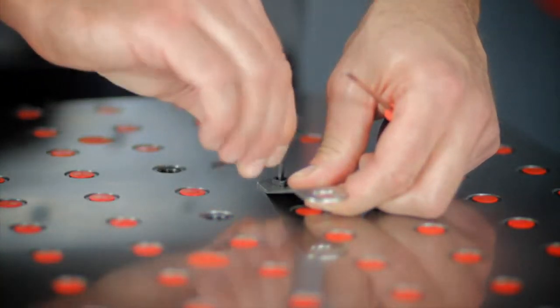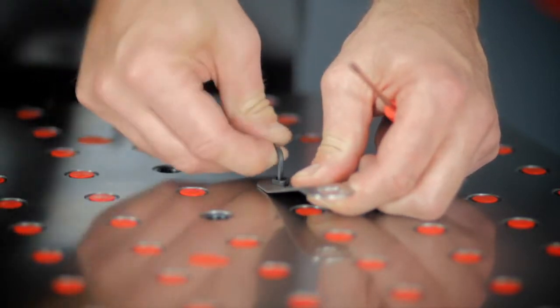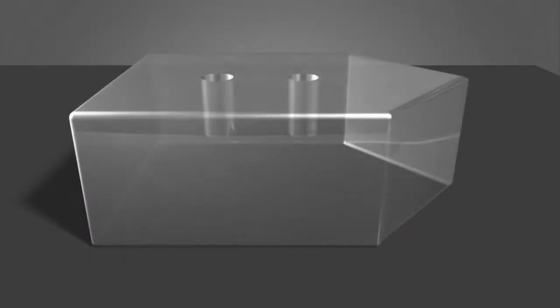To locate a part accurately using a round and diamond pin set, it would be helpful to understand how this method of location works. A round and diamond pin locates off of existing features. The location of the features to one another is important.